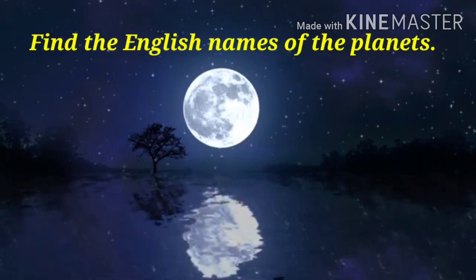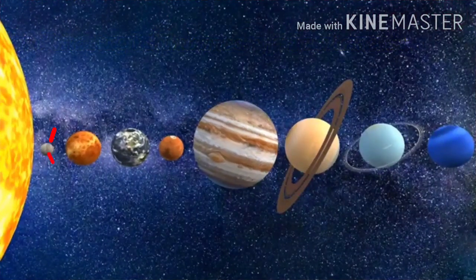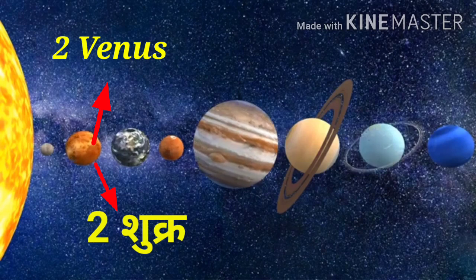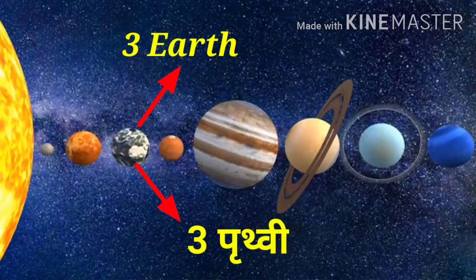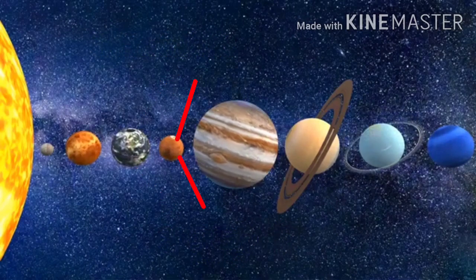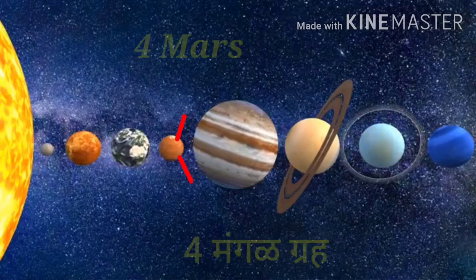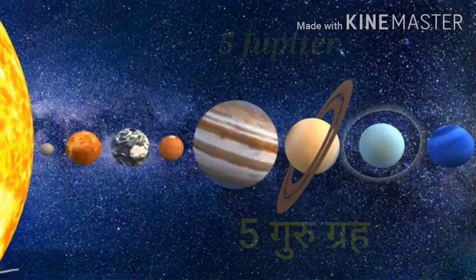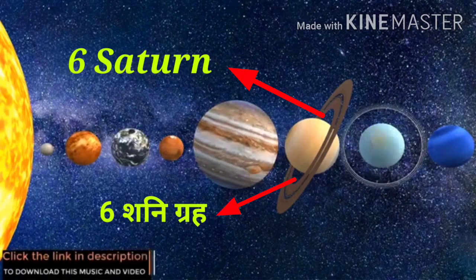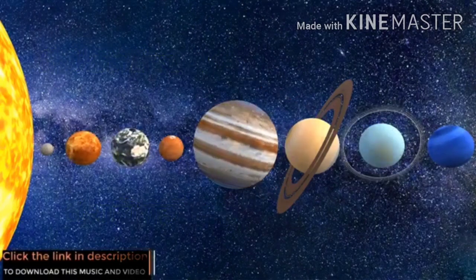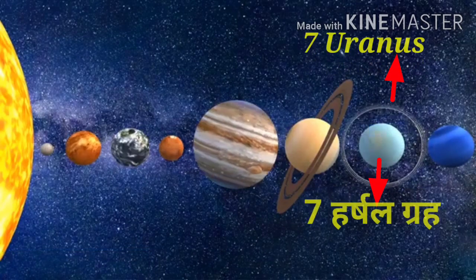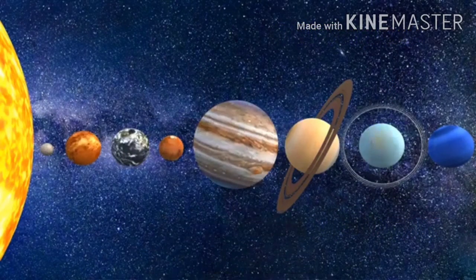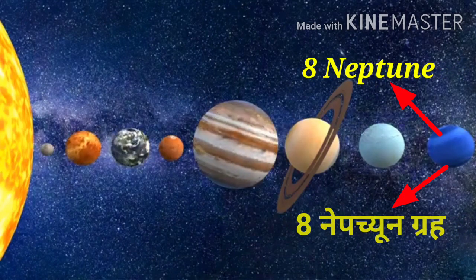Find the English names of the planets. First: Mercury. Third: Earth. Fourth: Mars (Mangal Grah). Fifth: Jupiter (Guru Grah). Sixth: Saturn (Shani Grah). Seventh: Uranus (Harshan Grah). Eighth: Neptune.